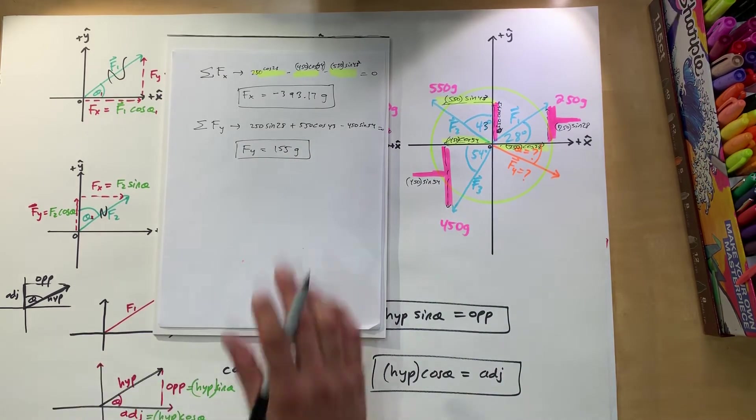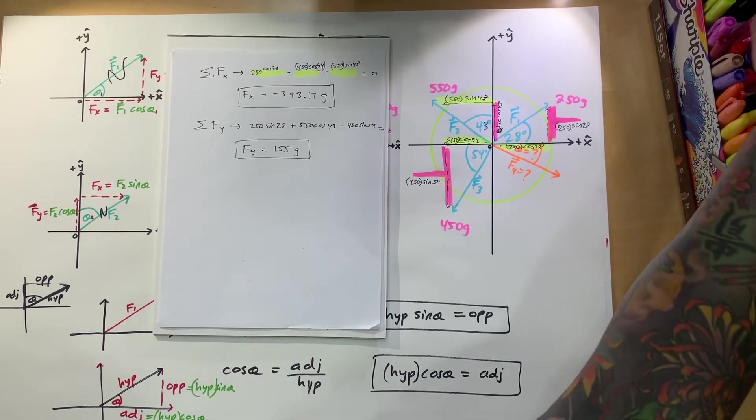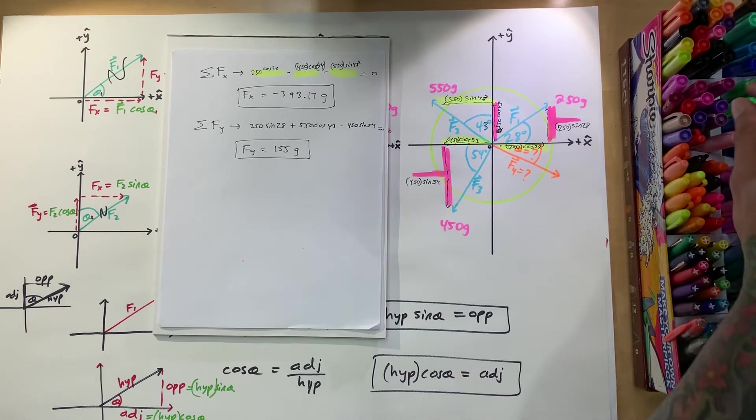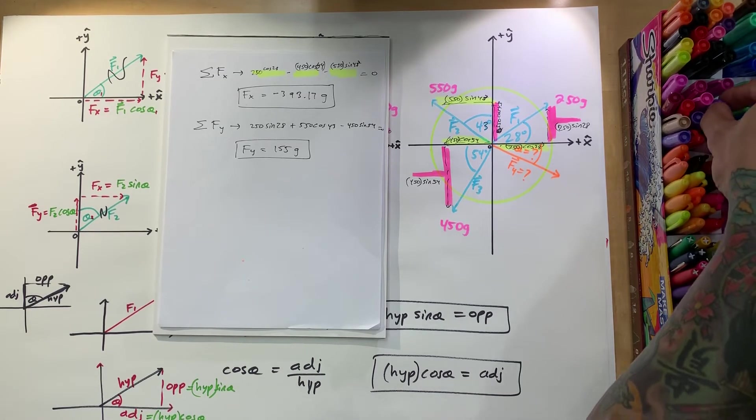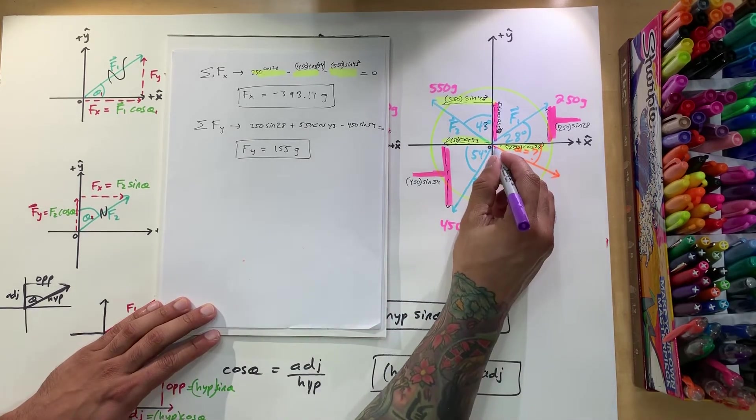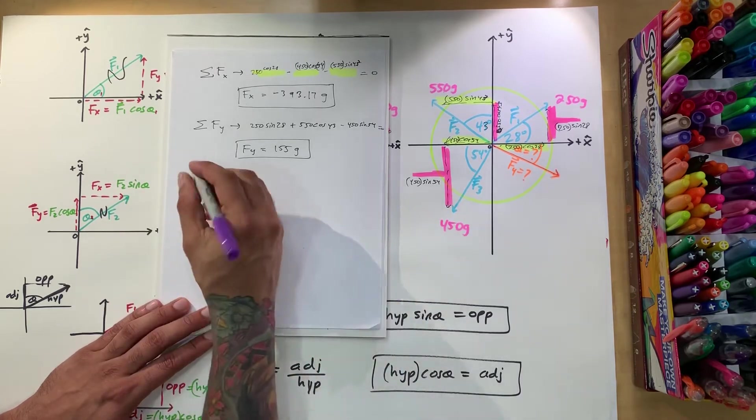Okay, perfect. We got both things that we wanted, right? The sum of forces in the x component, sum of forces in the y component. Okay, now let's choose wisely. Yeah. And now we're going to do the magnitude, right? So now we're trying to find this. How much weight we need to put on that to balance everything out.